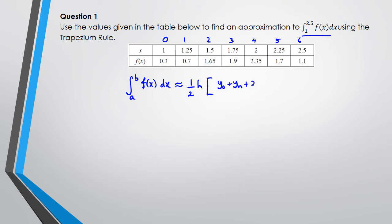Now the formula for trapezium rule is: the integral from A to B of f(x) dx is approximately half h times y₀ plus yₙ plus 2 times y₁ plus y₂ all the way to yₙ₋₁.